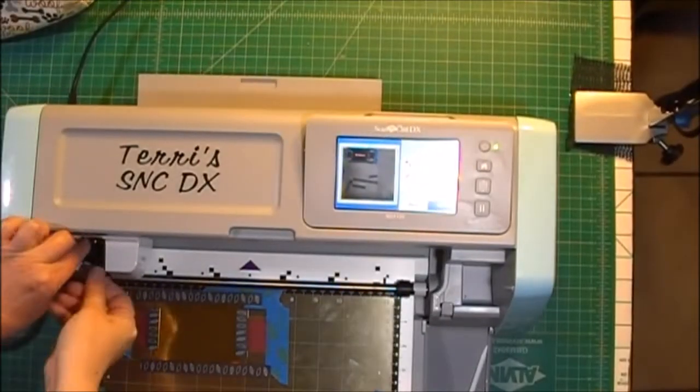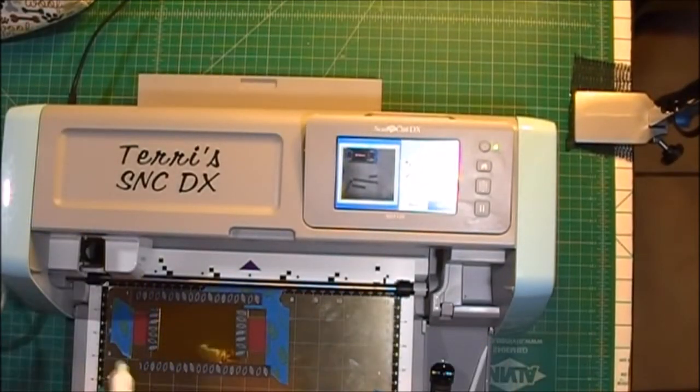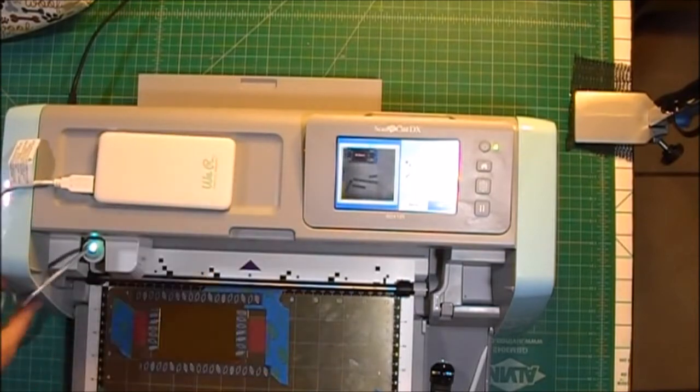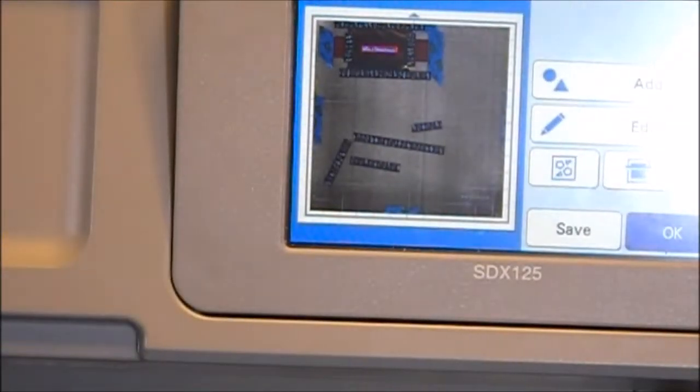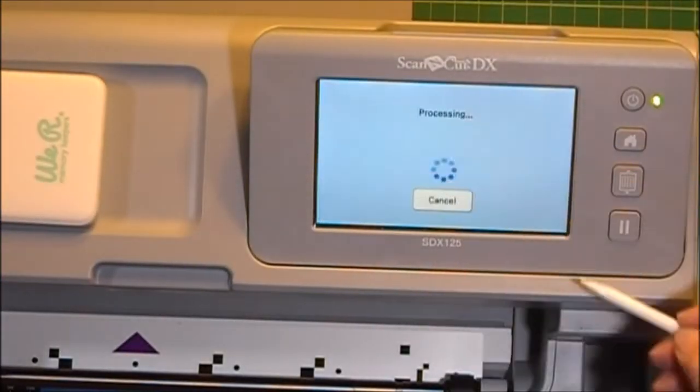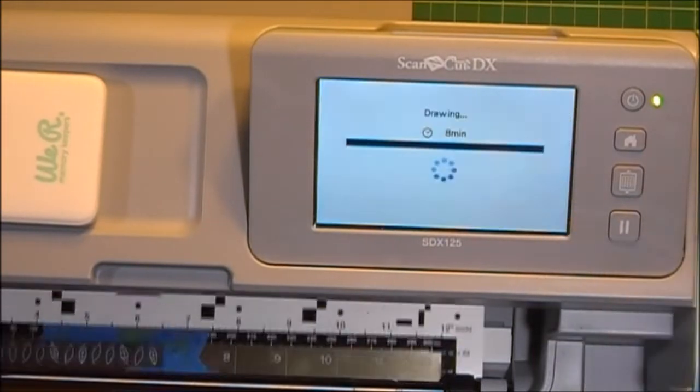And I'll remove my blade. And I'll put in the heated foil quill. And click OK. And then set it to draw. And press Start.